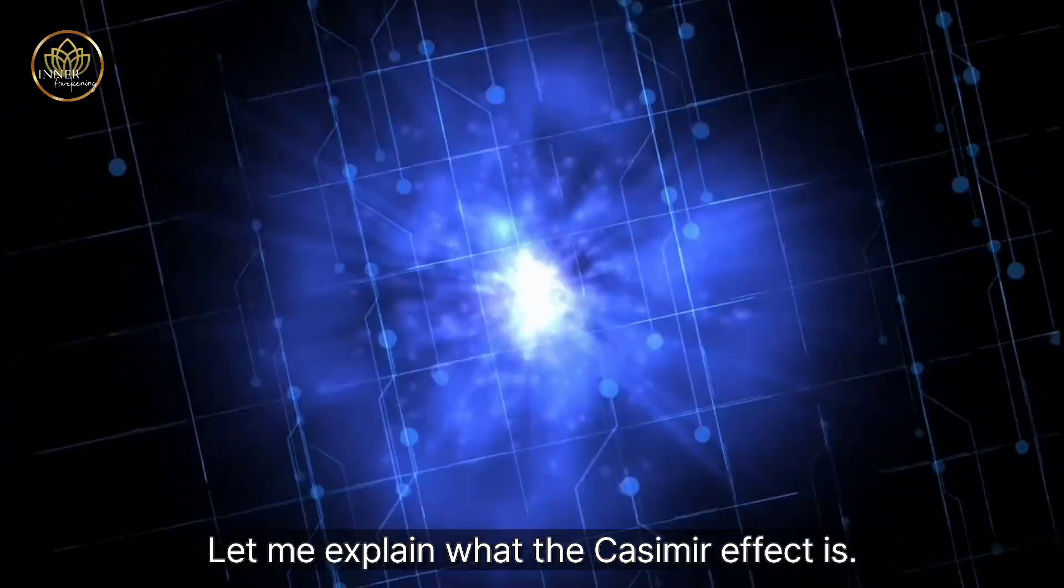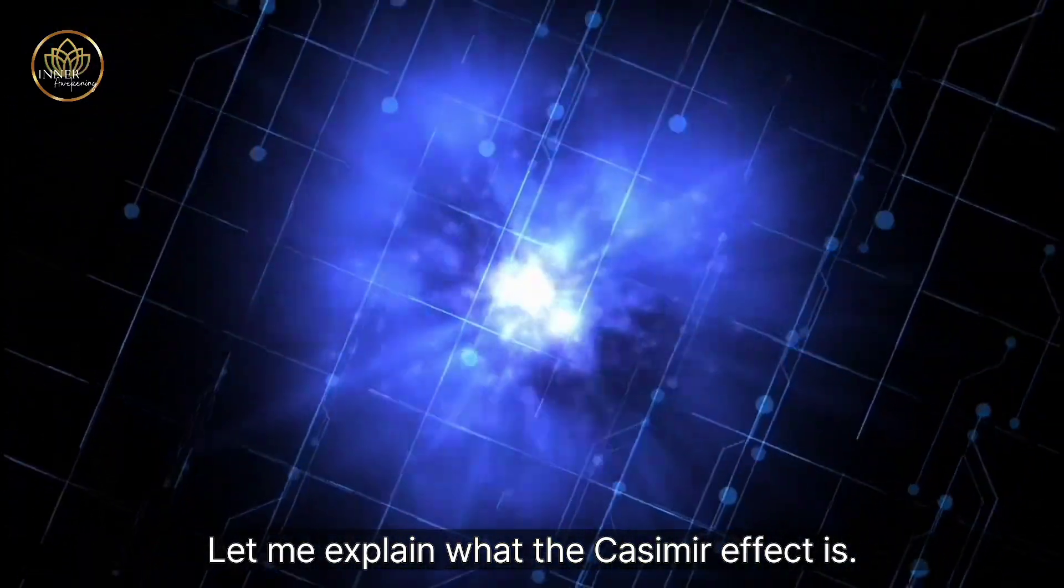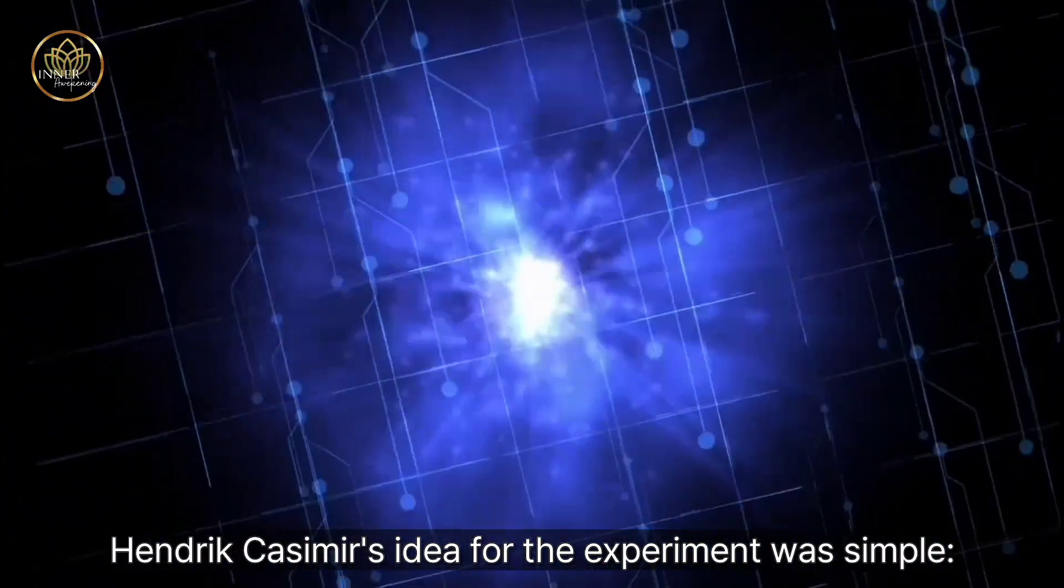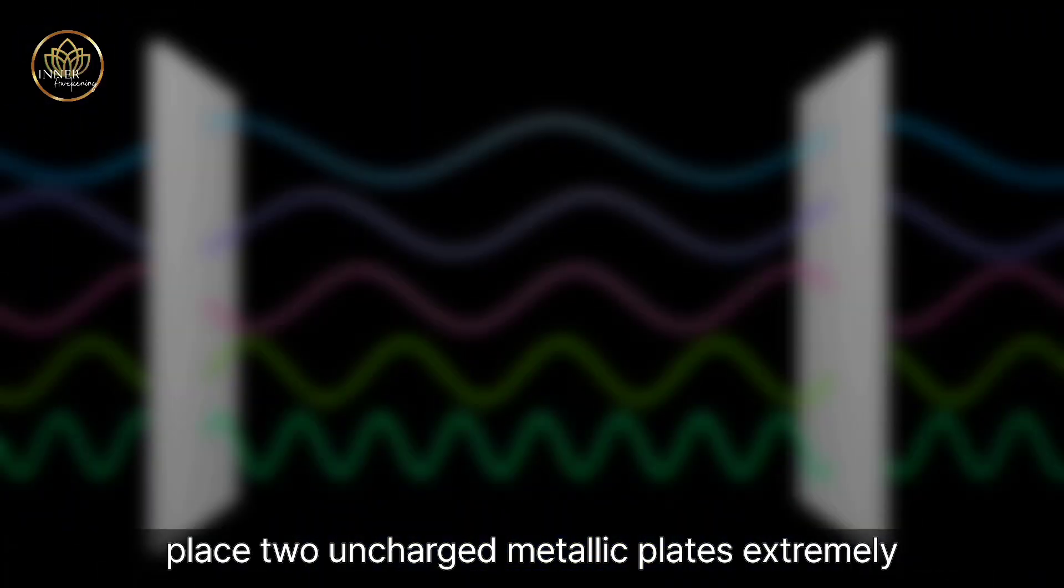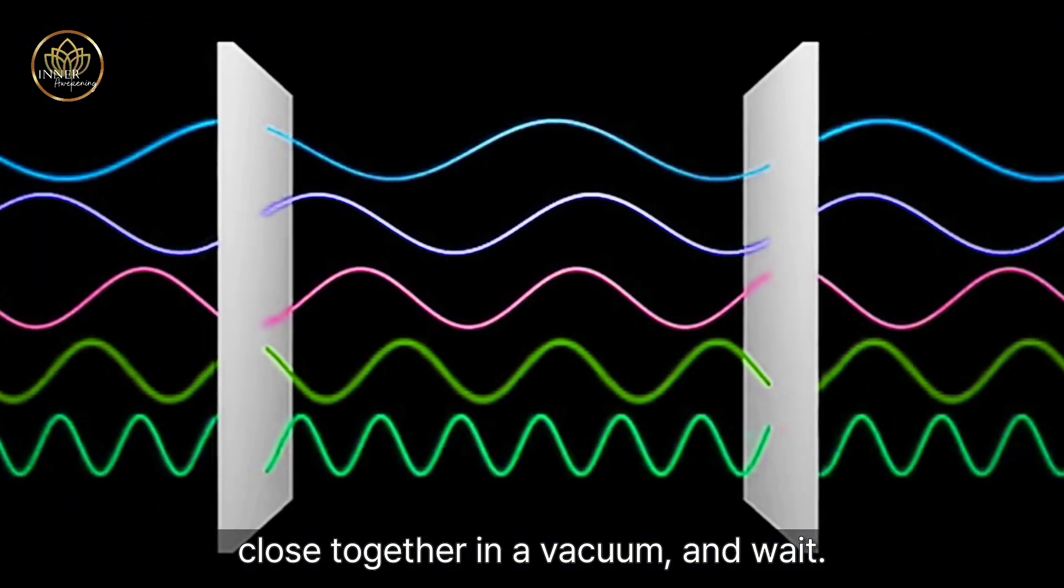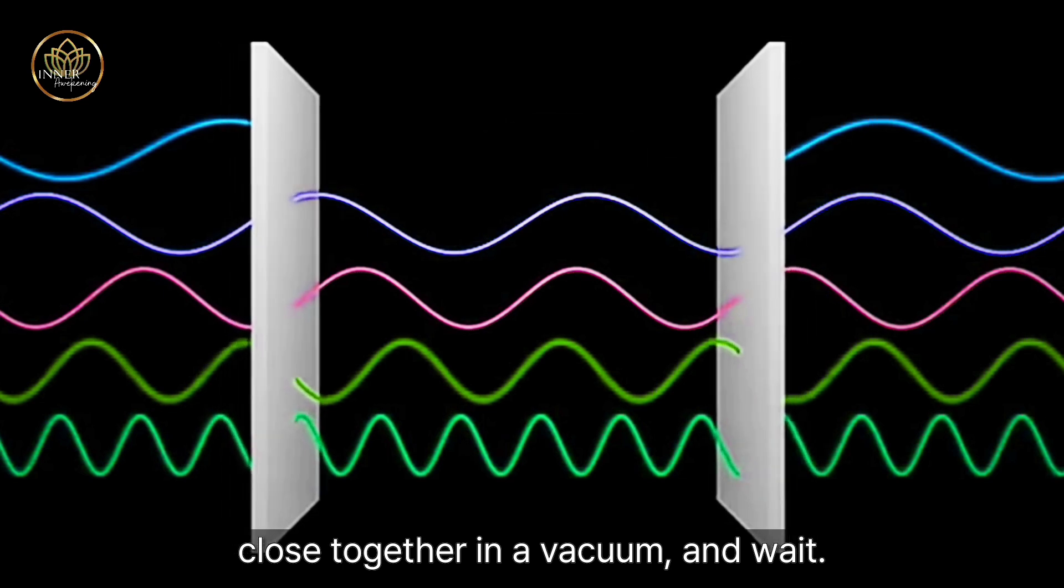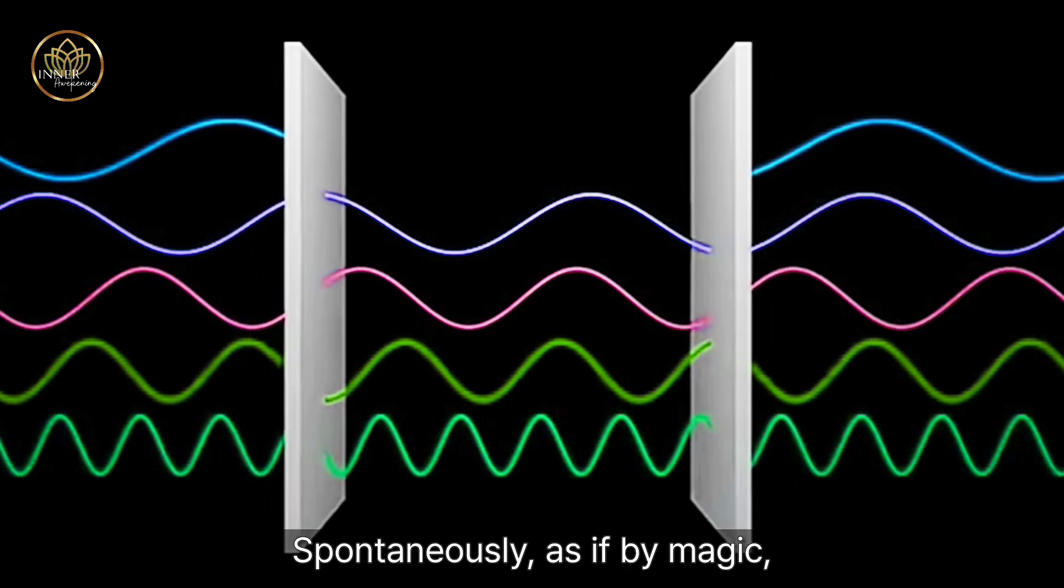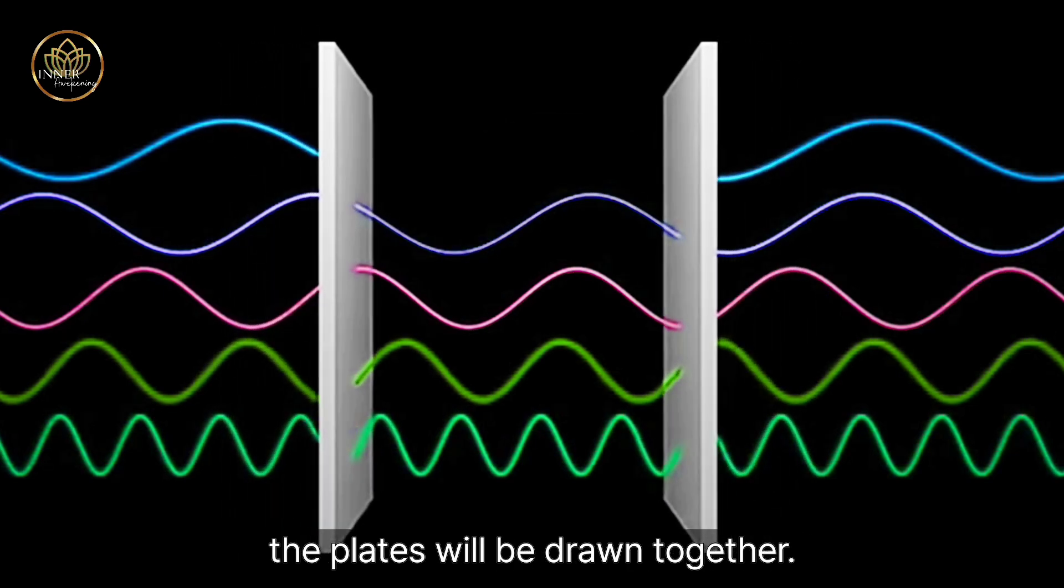Let me explain what the Casimir effect is. Hendrik Casimir's idea for the experiment was simple: place two uncharged metallic plates extremely close together in a vacuum, and wait. Spontaneously, as if by magic, the plates will be drawn together.